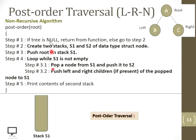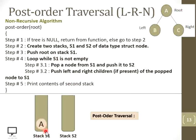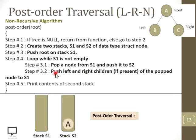Starting the dry run: step 1, check the tree is not empty — yes, it is not empty, so we create stack S1 and stack S2. Step 3, push the root node onto S1. Node A is the root node and has been pushed onto S1. Step 4, we execute sub-steps 4.1 and 4.2 continuously while S1 is not empty. First, pop the top of S1 — that is A — and push it onto S2. Now push the left and right child of the popped node A onto S1.